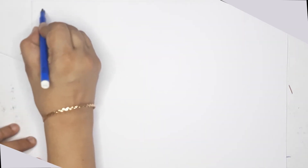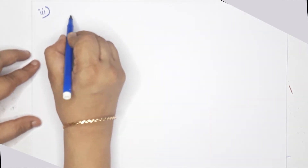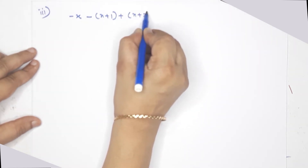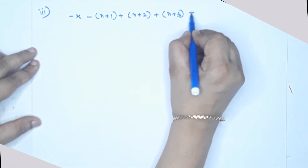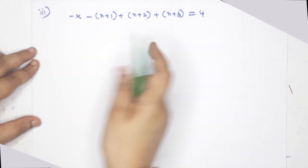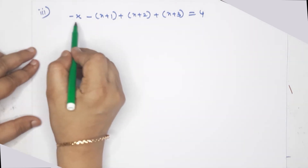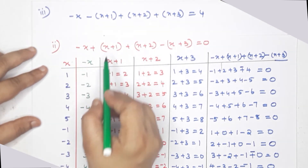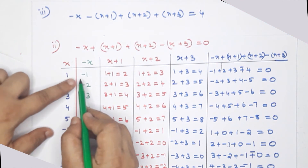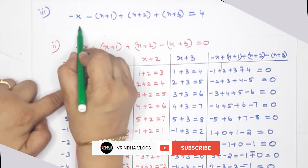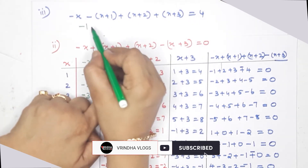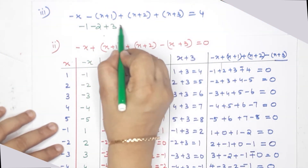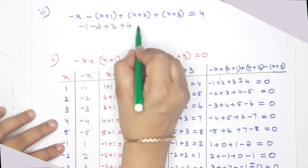Next question — third part: minus x, minus x plus 1, plus x plus 2, plus x plus 3, that is equal to 4. Let me check this once again. Here we have 4, where x has the values as before. Here minus 1 gives x plus 1 as minus 2, x plus 2 as plus 3, and this is plus 4. The answer is 4.